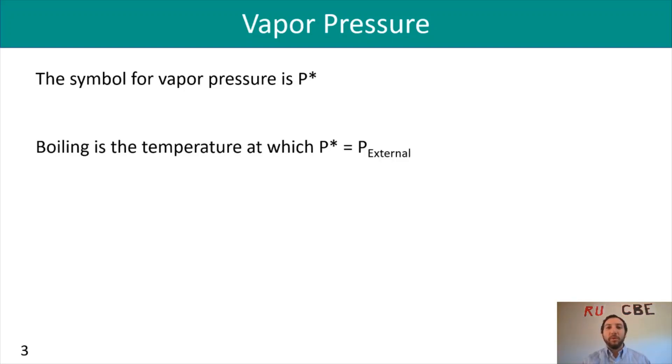The boiling temperature is defined as when your P star, your vapor pressure, equals P external. For water, the normal boiling point, since P external is one atmosphere, is 100 degrees Celsius.